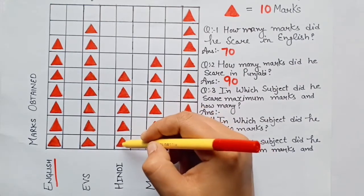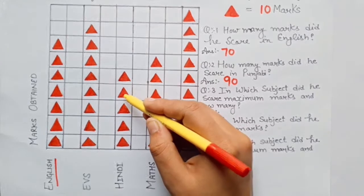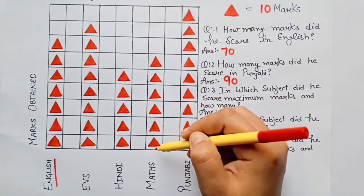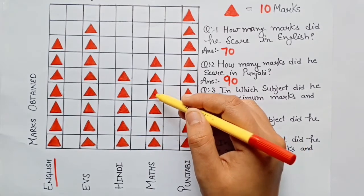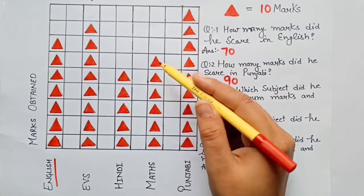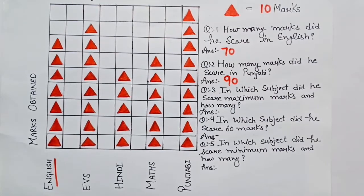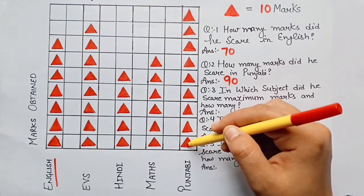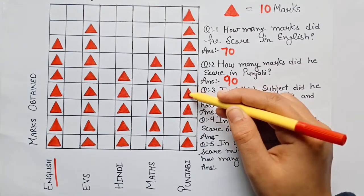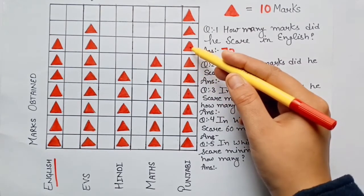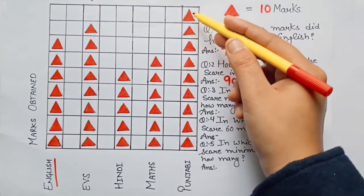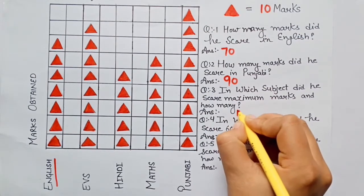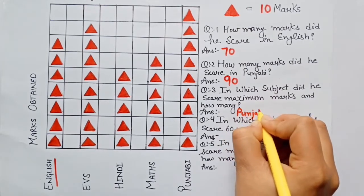Hindi mein kitne marks liye hain? 10, 20, 30, 40, 50 — usne Hindi mein 50 marks liye hain. Maths mein kitne liye hain? 10, 20, 30, 40, 50, 60 — usne Maths mein 60 marks liye hain. Punjabi mein 10, 20, 30, 40, 50, 60, 70, 80, 90 — to usne sabse zyada marks Punjabi mein liye hain. So the answer is Punjabi.